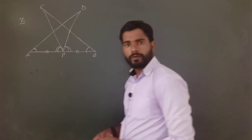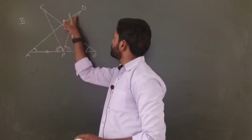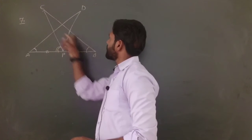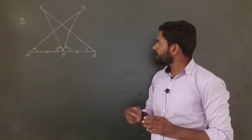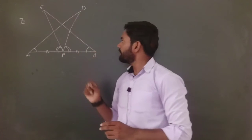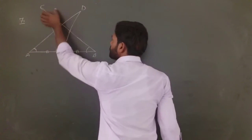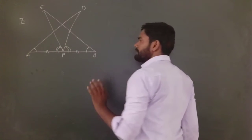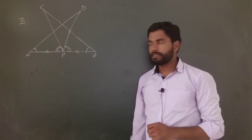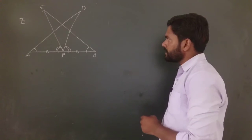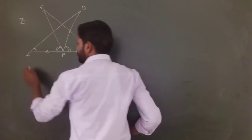What we have to do? First of all, we will try to prove these two triangles are congruent to each other, and then we have to prove AD and BE are equal. If we prove both triangles are congruent, then using the CPCT property, we can say the corresponding sides will be equal.